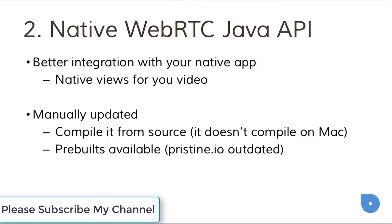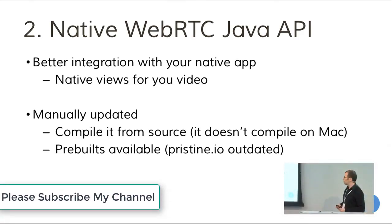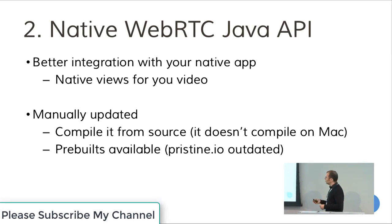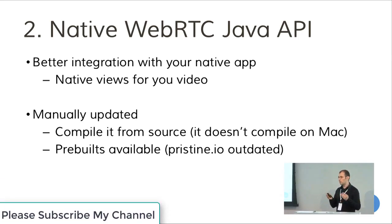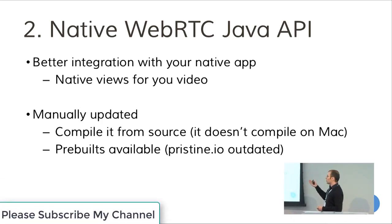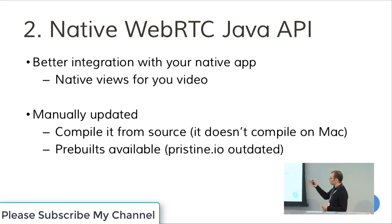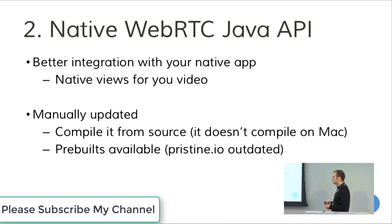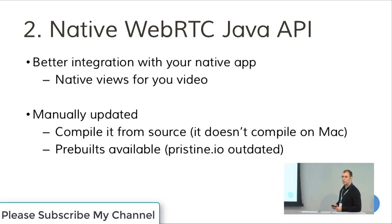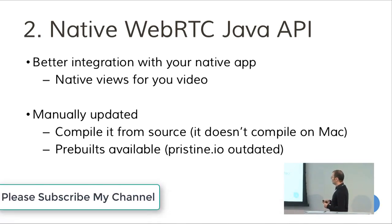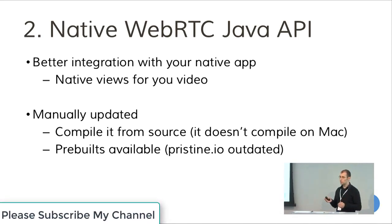Let's go to the second option, the Java APIs. WebRTC already provides some bindings for Java, so it's something you can already use. The good thing is that all the video is rendered using native views, so you can integrate all the Android UI with your video views and mix them to create your application as you want. It's manually updated. WebRTC is a big project, so there are pre-builds available. Pristine.io was one of the most popular ones, but it's outdated now — they are not maintaining it anymore. The other option is to compile from source, which is not easy. For Android, it doesn't compile on Mac or Windows, so you need a dedicated Ubuntu box to compile it, which makes it hard to maintain.